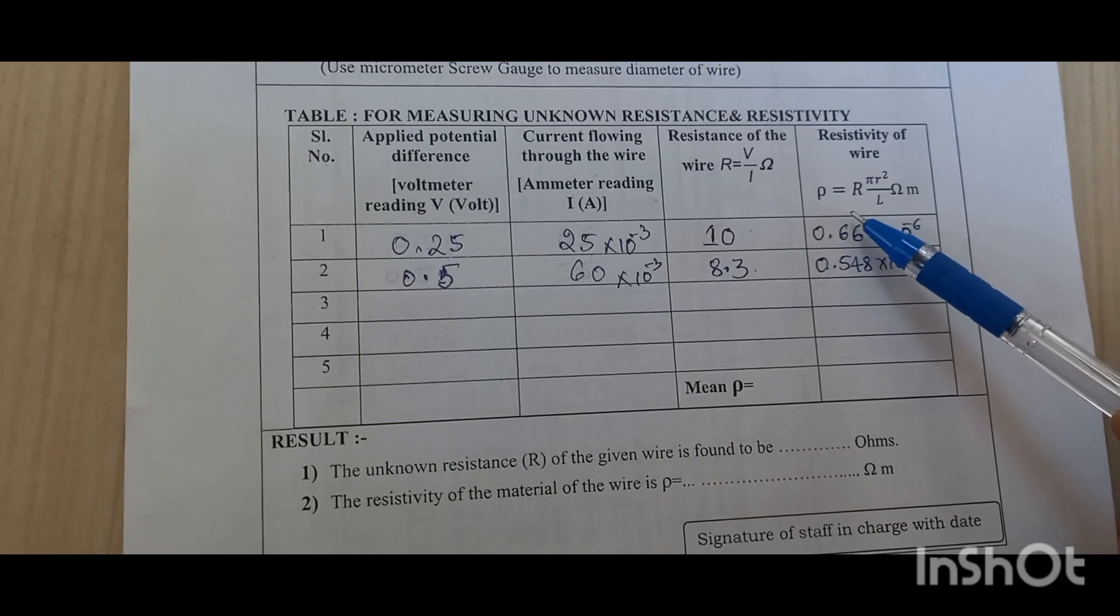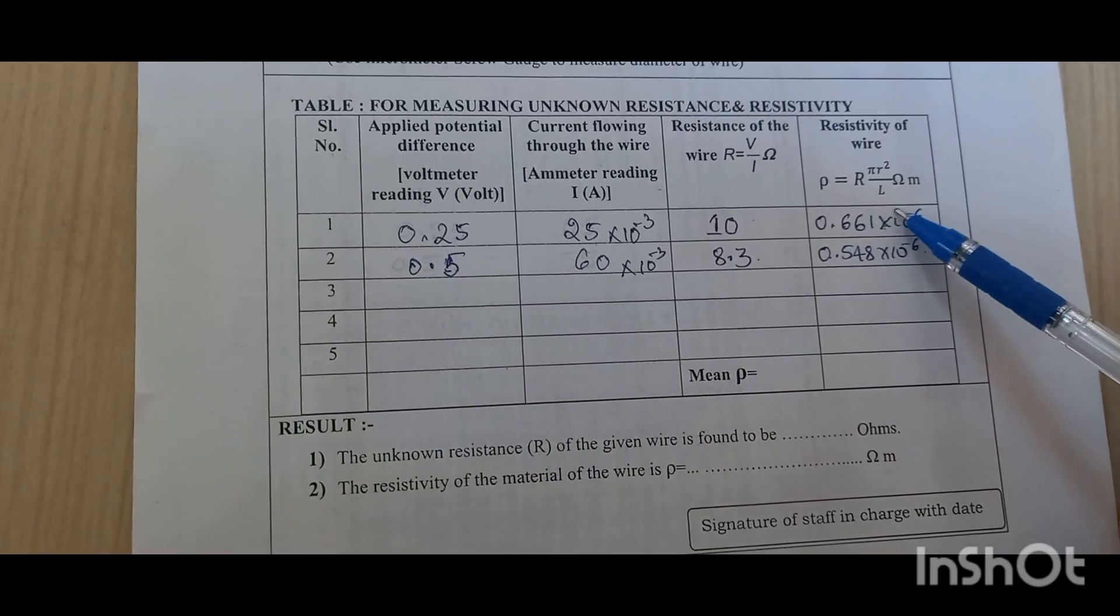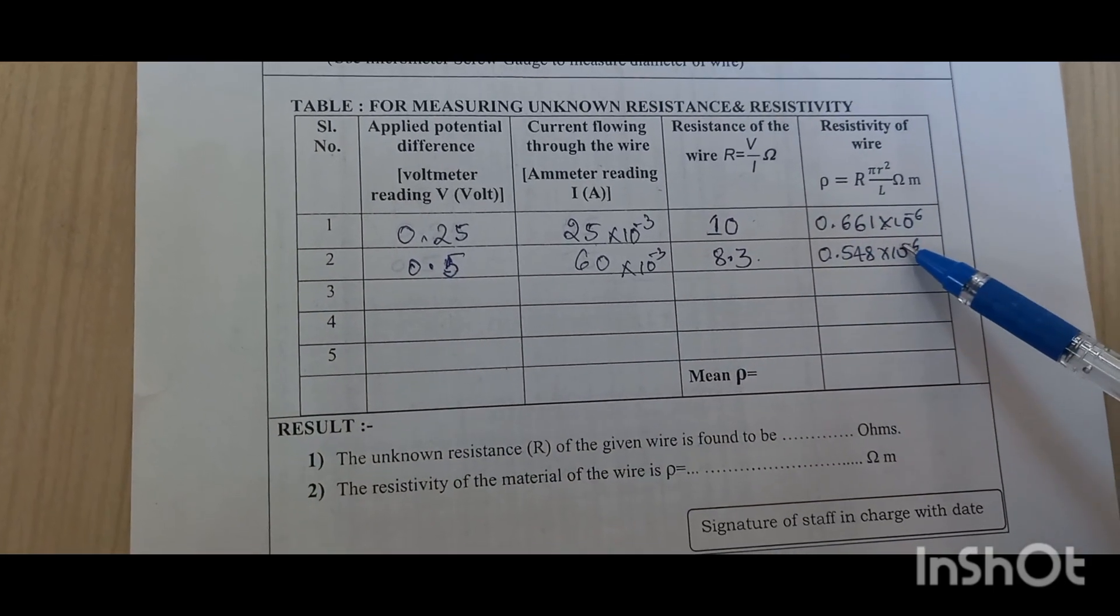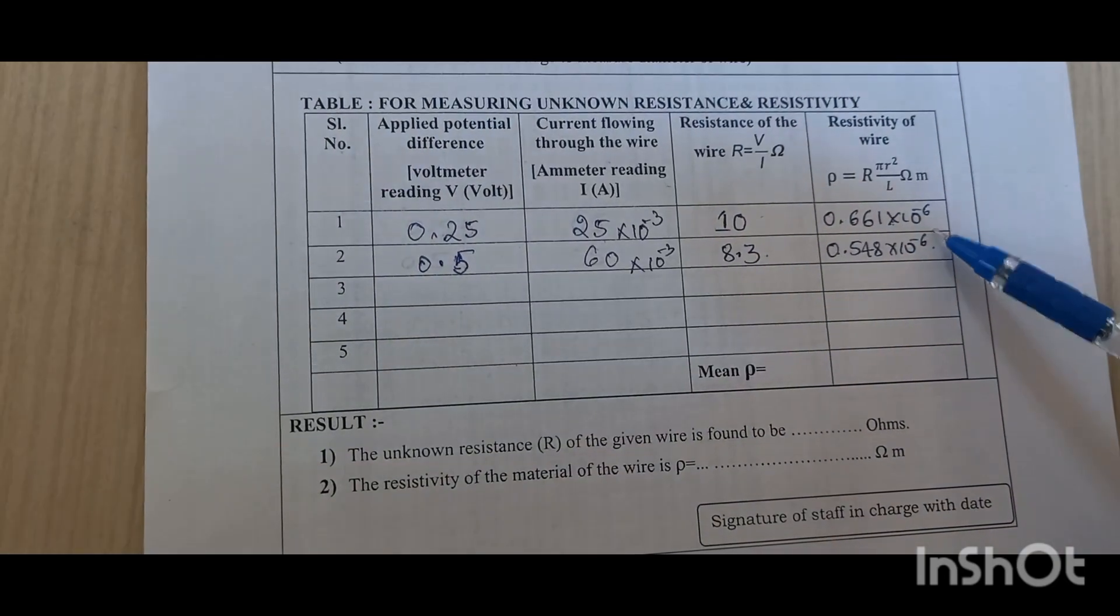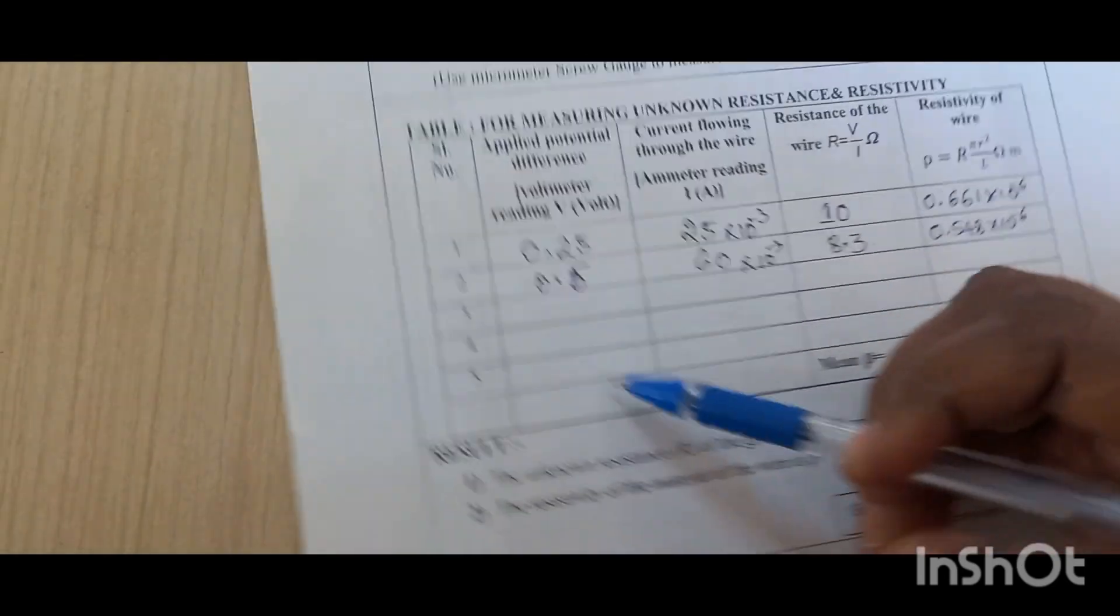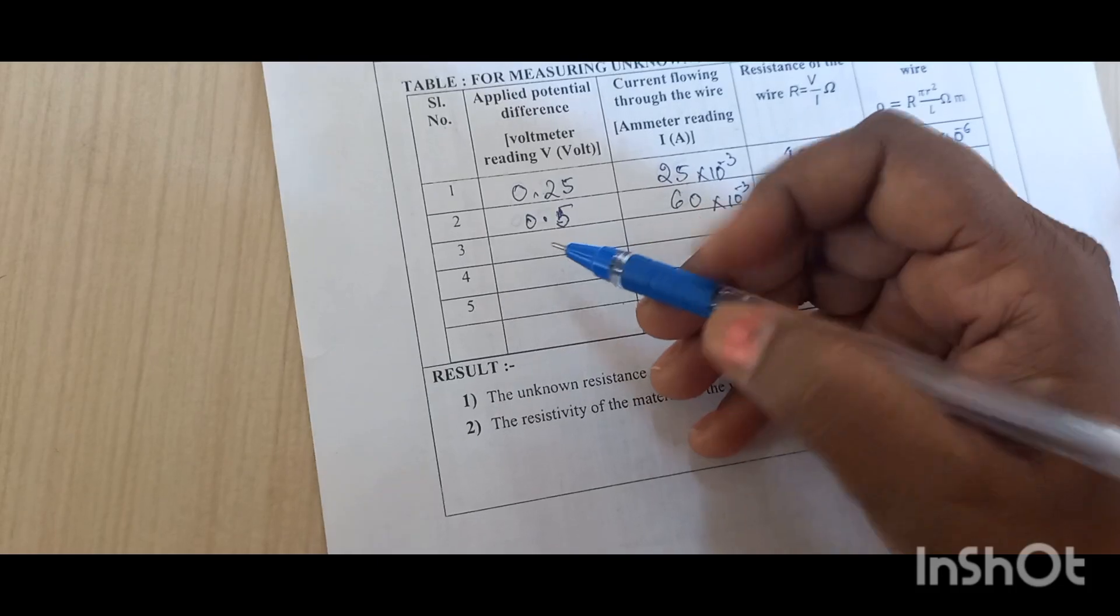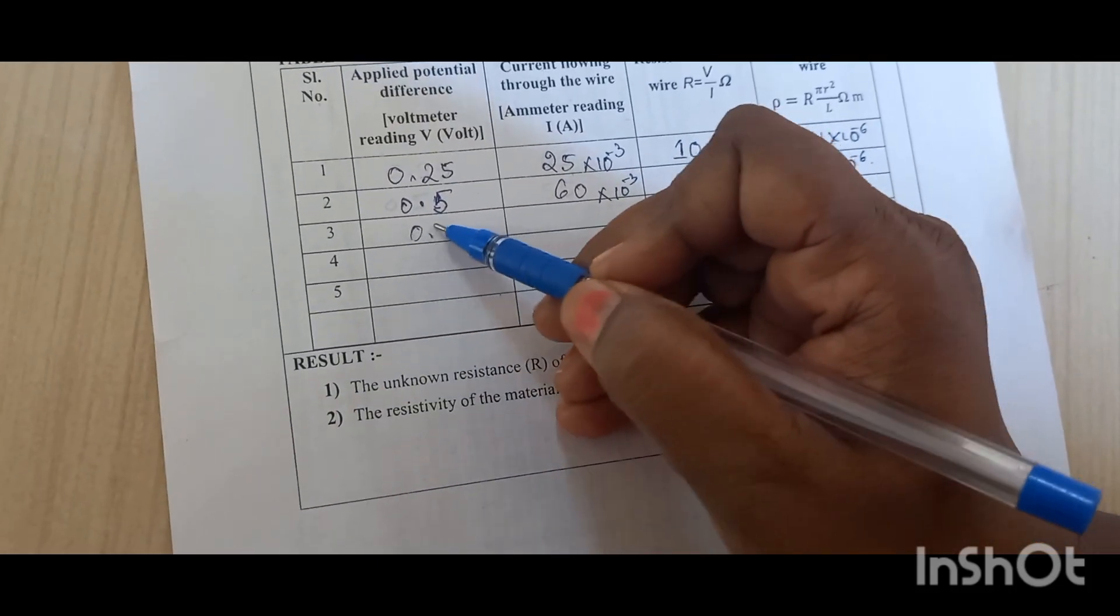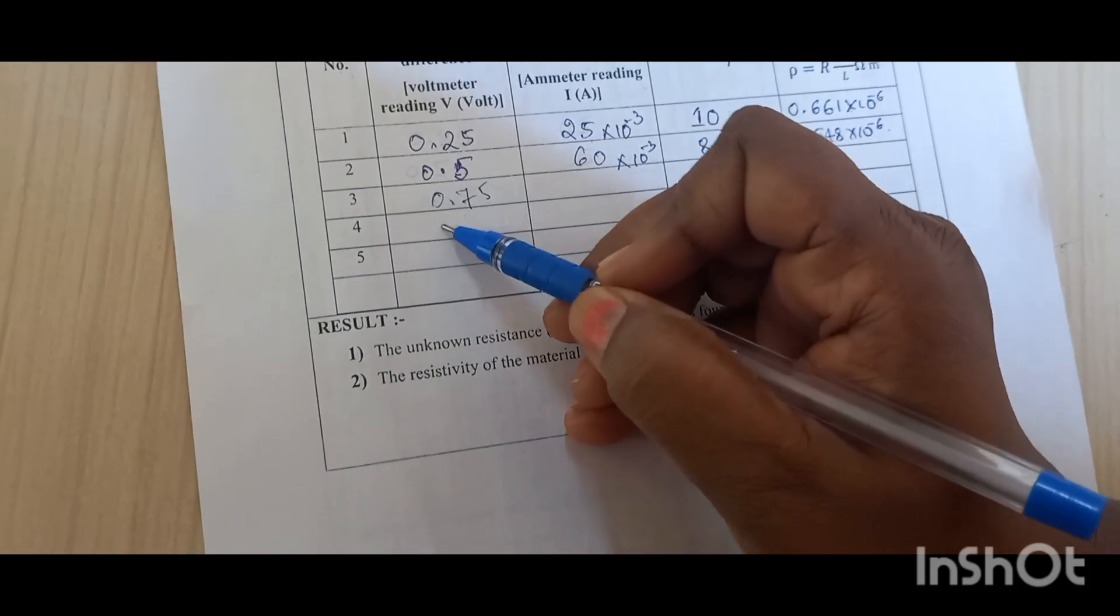Then resistivity rho equal to R pi R square by L. This is how much we have got, that is 0.661 into 10 to the power of minus 6. So as the experiment proceeds let us take for 0.75 then 1.